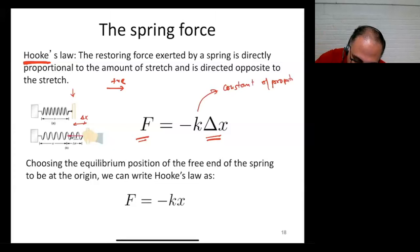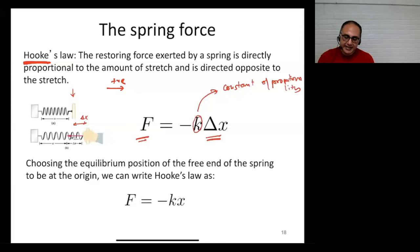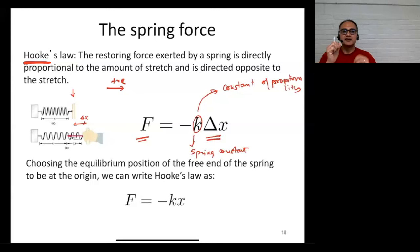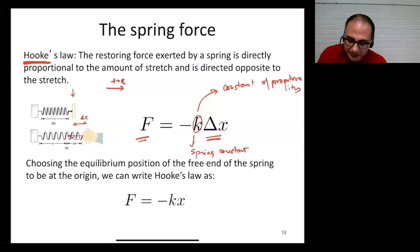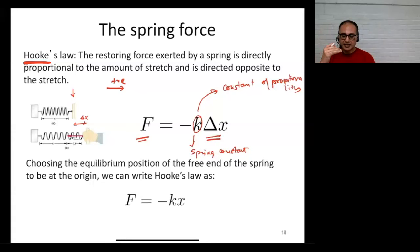The minus sign tells us that the force is opposite the direction of delta x. Using a rightward positive sign convention: when you stretch the spring to the right, delta x is positive, so the force is to the left. When you compress the spring, delta x is negative, and the force is positive, meaning to the right. The minus sign helps us keep track of the direction of the force.